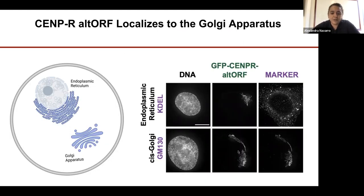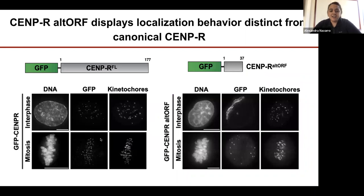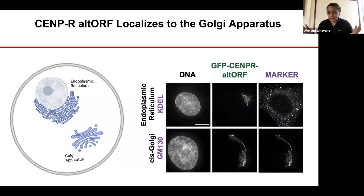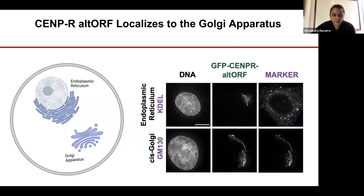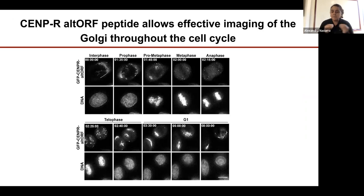So we concluded that this small peptide had a unique localization behavior — it localized very specifically to the Golgi. To provide some context, our expertise — my expertise and really the expertise of our entire lab — is in studying SEMP proteins and other proteins that make up the kinetochore. So finding that this SEMP peptide localizes to this very different structure was very much outside our immediate area of expertise.